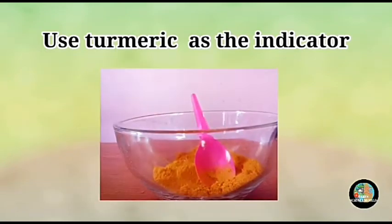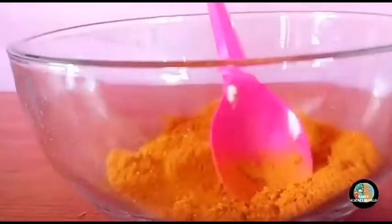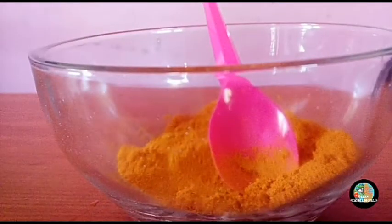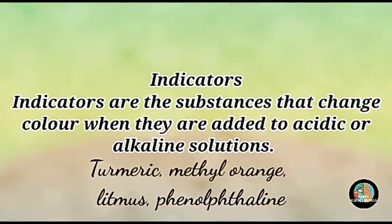We use turmeric as the indicator for acid and base reactions. pH indicators are used to test whether a solution is acidic or basic. Indicators are substances that change color when added to acidic or alkaline solutions. Litmus, methyl orange, phenolphthalein, and turmeric are examples of indicators. Turmeric is a natural indicator.